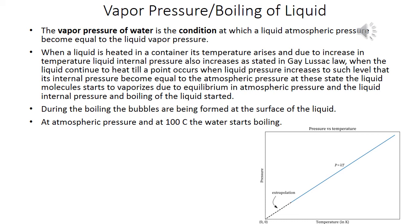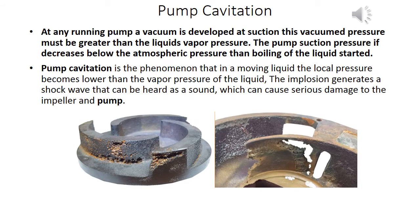During boiling, bubbles are formed at the surface of the liquid. At atmospheric pressure and 100 degrees Celsius, water starts boiling. In any running pump, a vacuum is developed at suction; this vacuum pressure must be greater than the liquid's vapor pressure. If the pump suction pressure decreases below atmospheric pressure, boiling of the liquid begins.